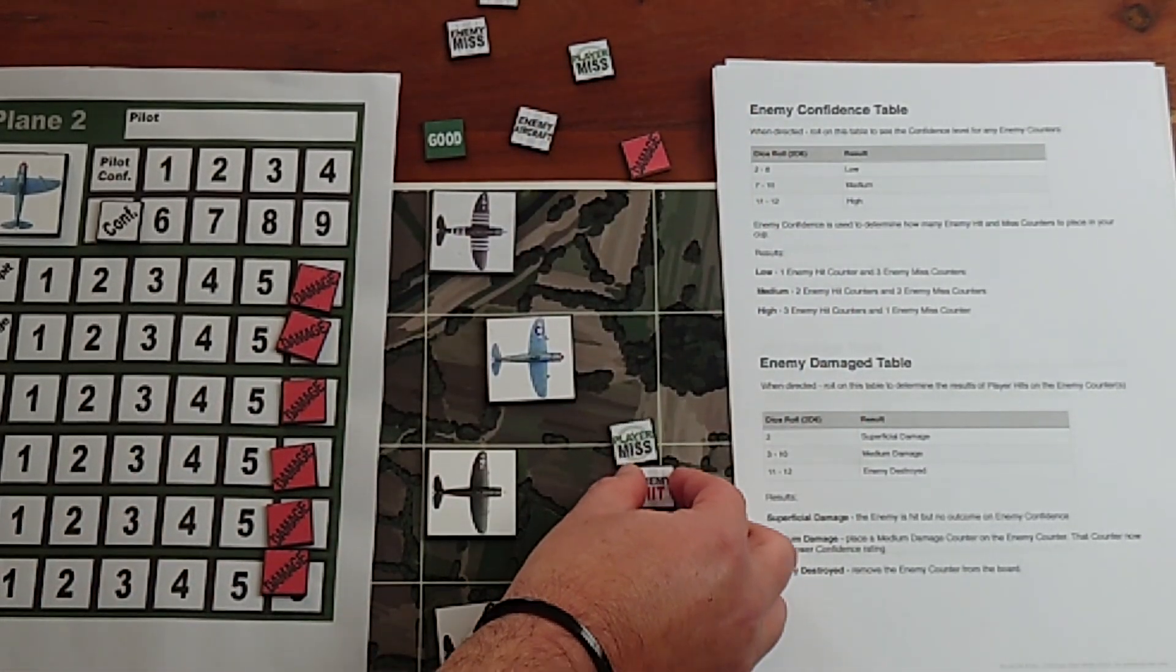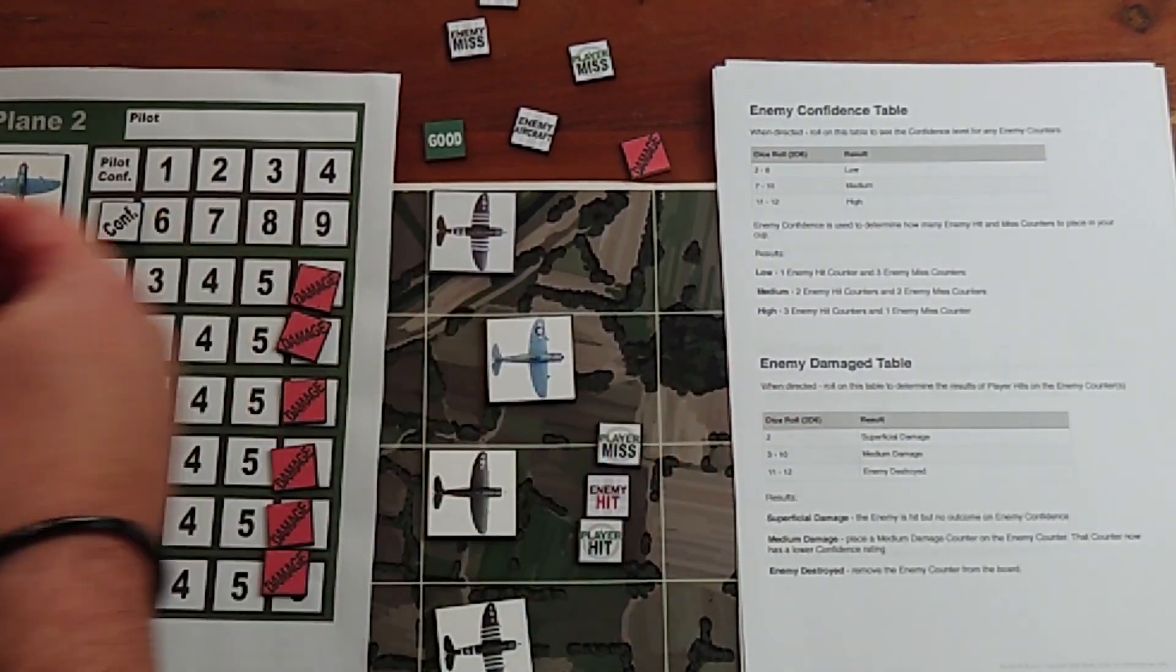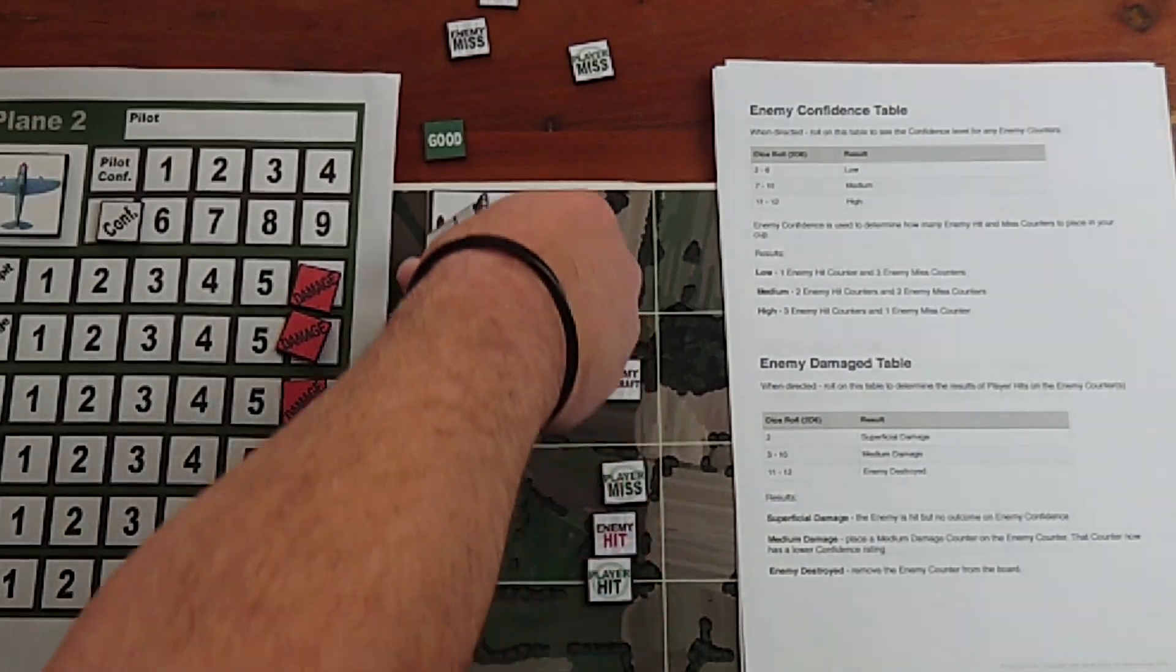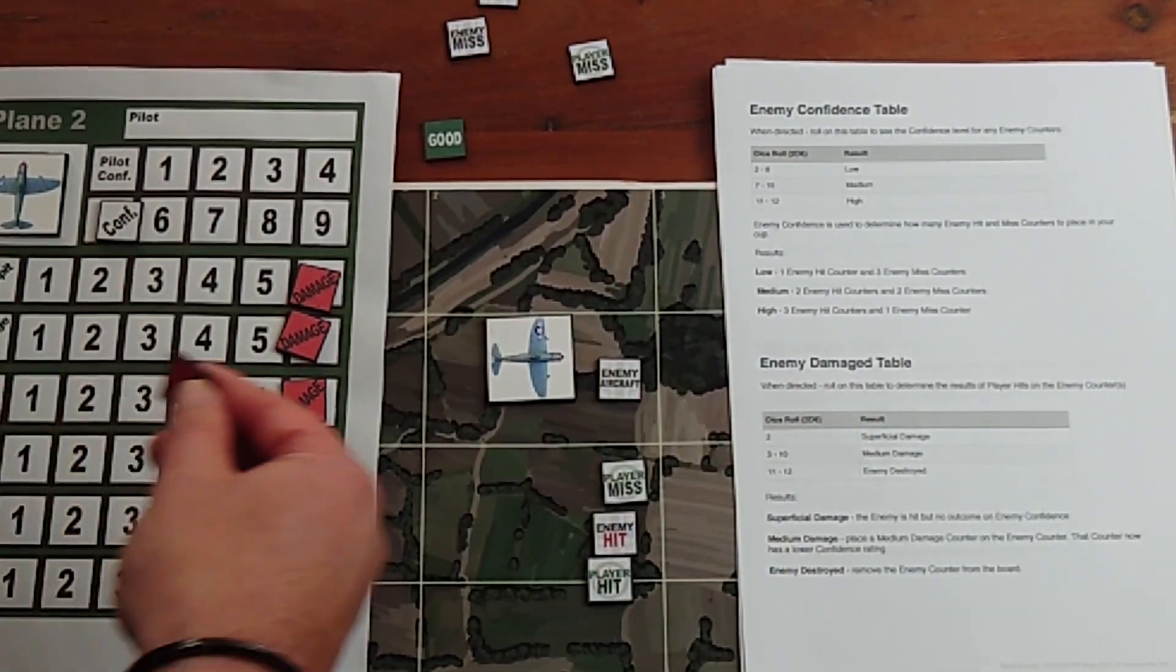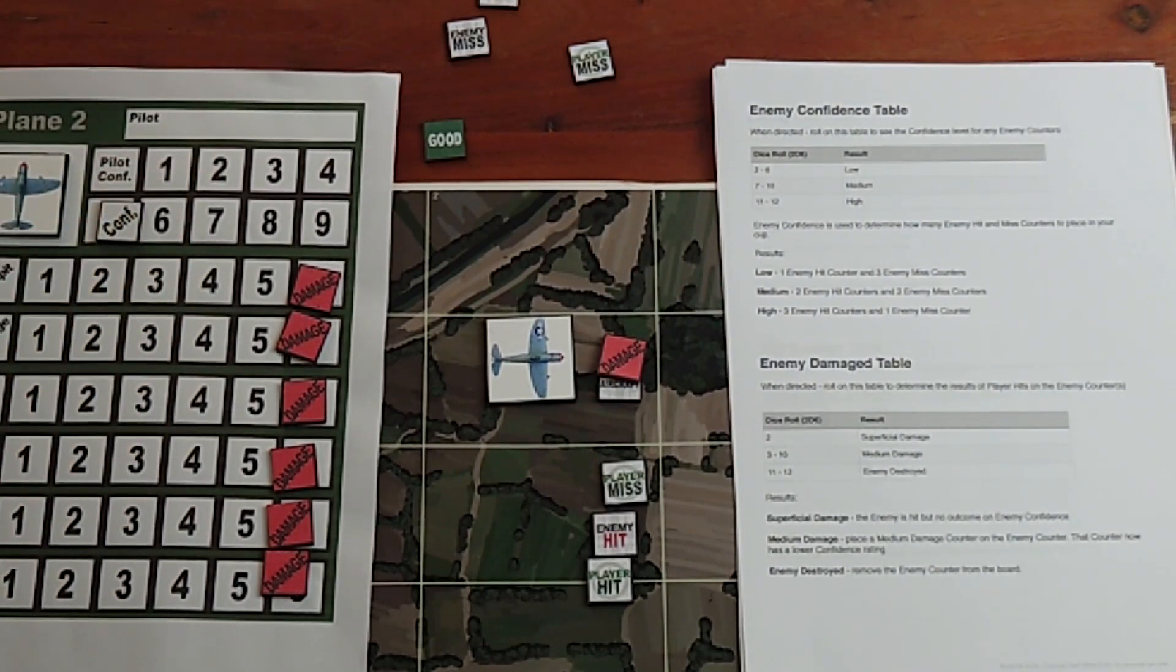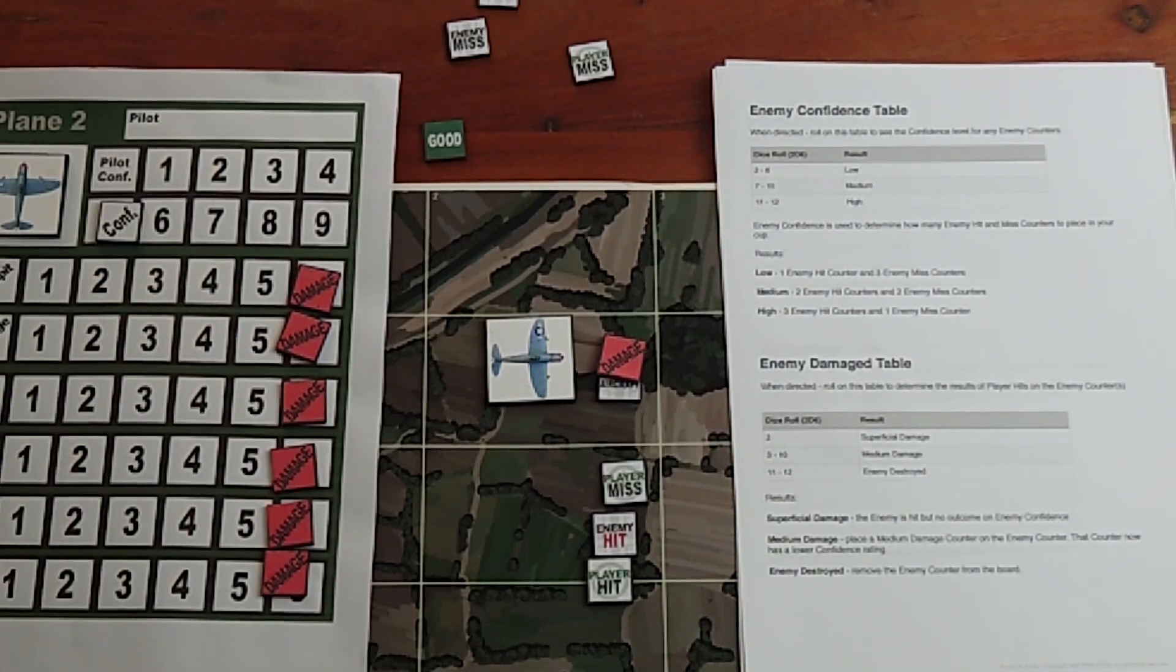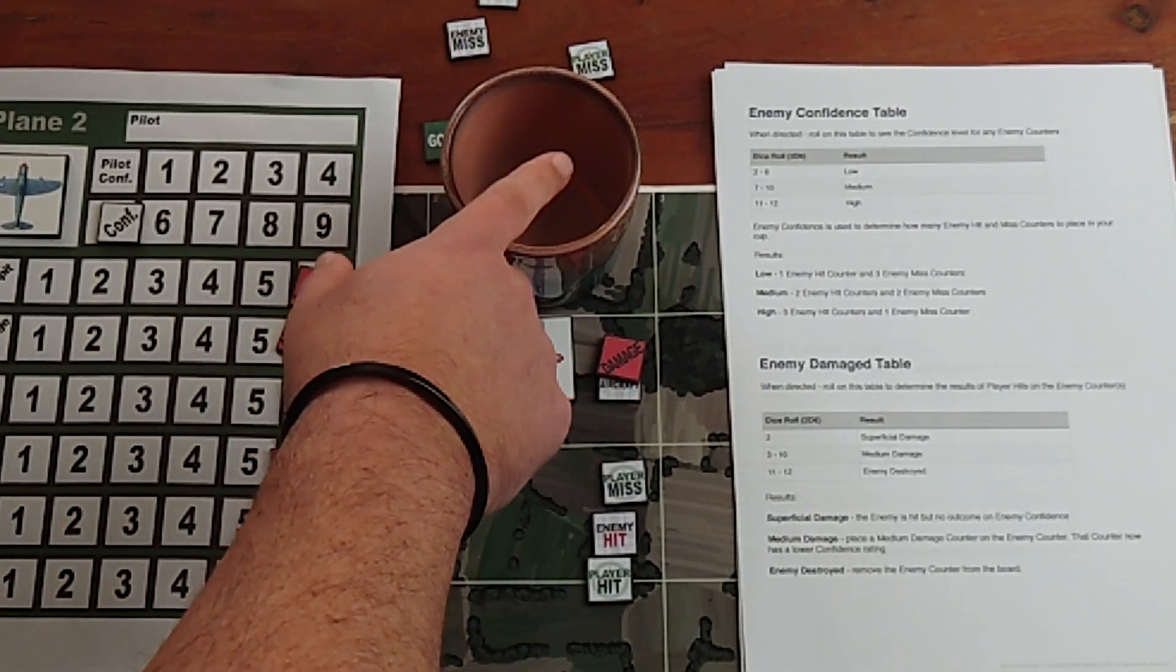We would still then work out the enemy hit because combat is simultaneous. I'd still have to work out the enemy hit, but I would have destroyed it. What more likely would have happened is I would have done medium damage. The medium damage on the enemy aircraft reduces their confidence level by one level. If they're at low confidence, you can't go below low, so it stays as it is. That means the next time or the next round of combat, I would be putting different numbers of counters into the cup for the enemy.